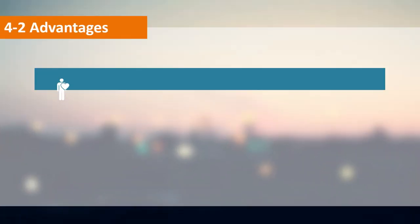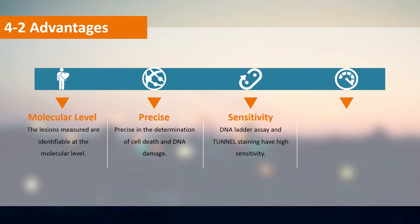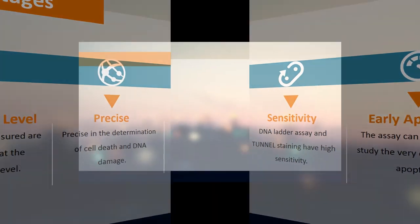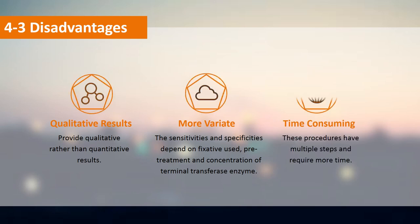The reactions are based on the direct labeling of 3'-hydroxyl termini of DNA breaks, and thus the lesions measured are identifiable at the molecular level. DNA breaks occur very early in apoptosis, prior to changes in cell morphology, so these assays can be applied to study very early apoptotic events. The DNA ladder assay and TUNEL staining have high sensitivity and are precise in determining cell death and DNA damage. However, they provide qualitative rather than quantitative results, require multiple steps and more time, and their sensitivities and specificities depend on the fixative used, pre-treatment, and concentration of terminal transferase enzyme.